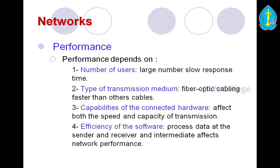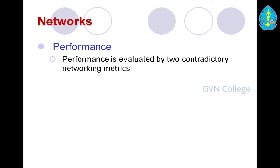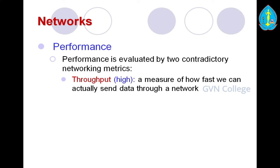Performance is evaluated by two networking metrics: throughput and delay. Throughput should be high — measuring how fast we can actually send data through a network. Delay should be low, meaning low network processing delay.